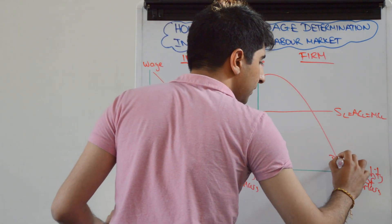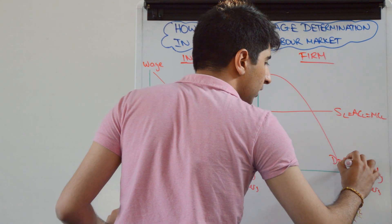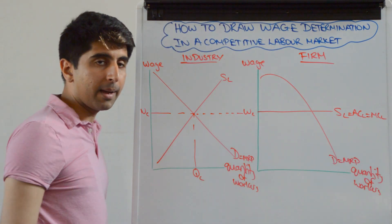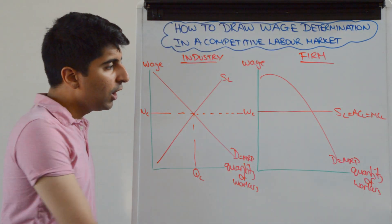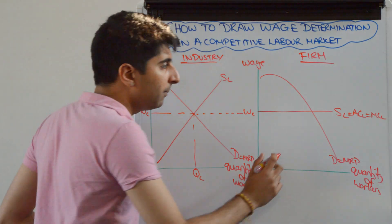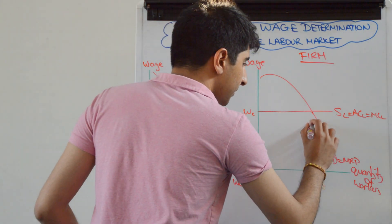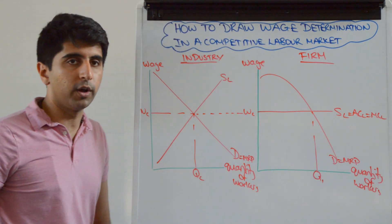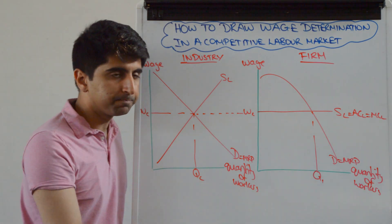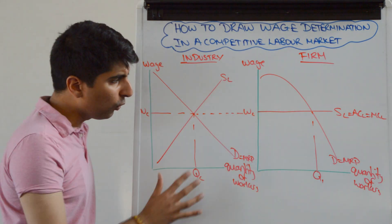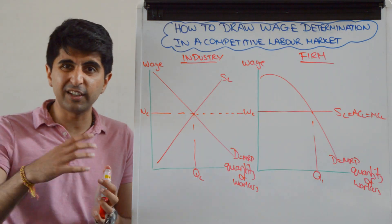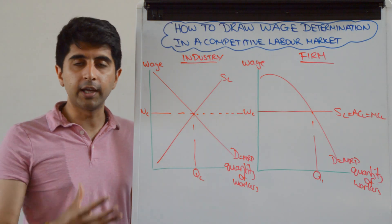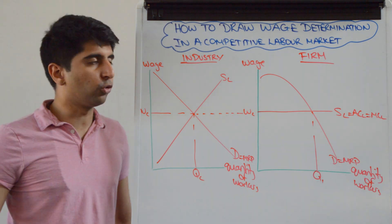We also need to draw the firm's demand curve, which is just the MRP. So we can draw and label the demand curve: D equals MRP. Where demand equals supply for the firm, that determines the firm's employment, i.e. the firm's quantity of workers, and we can call that Q1. So all the labelling needs to be done as such. It's actually a very simple diagram, as long as you know what you're doing and how you're drawing it.